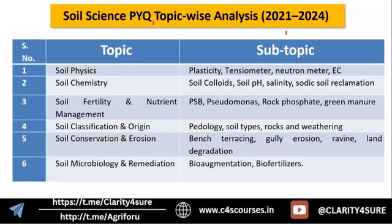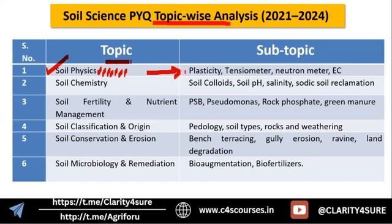The first major heading is soil physics or soil physical properties. Important physical properties include soil temperature, soil color, soil density, BD and PD concepts, means of color chart, soil structure, and soil texture. From this heading, PYQs in the last four years covered topics like the plasticity concept, tensiometer — which is used to measure soil moisture tension — and neutron meter, which is related to soil moisture and electrical conductivity.